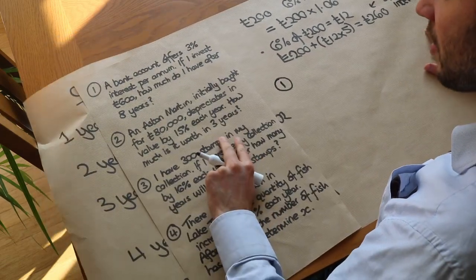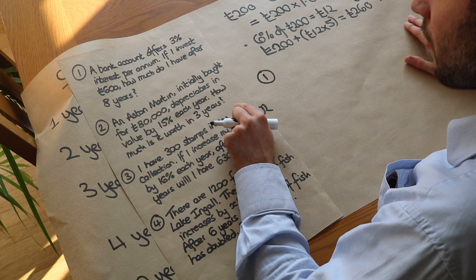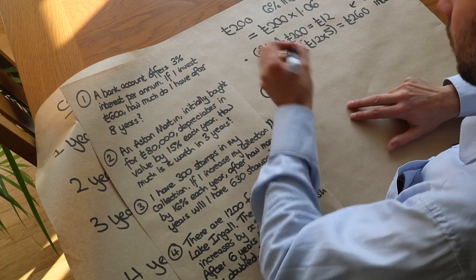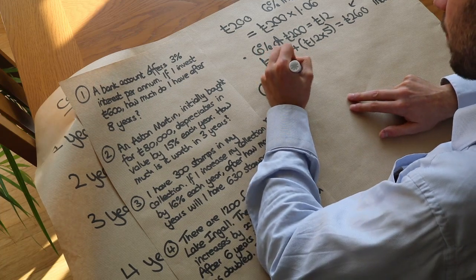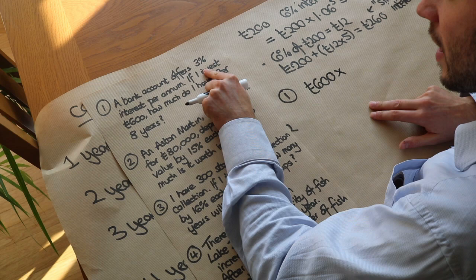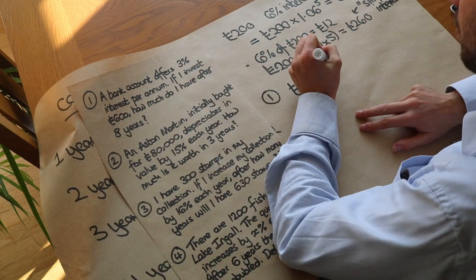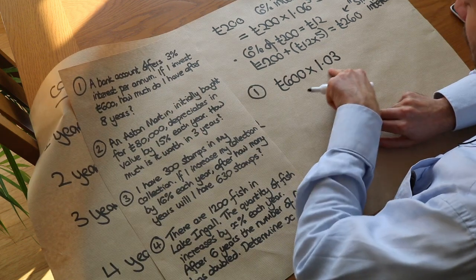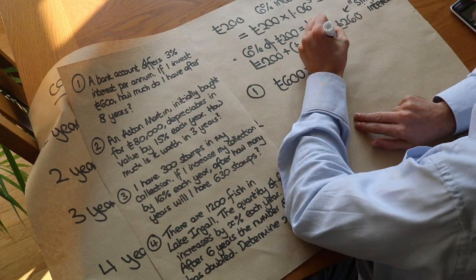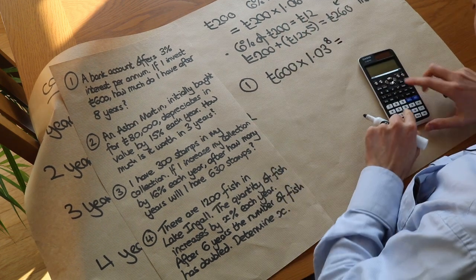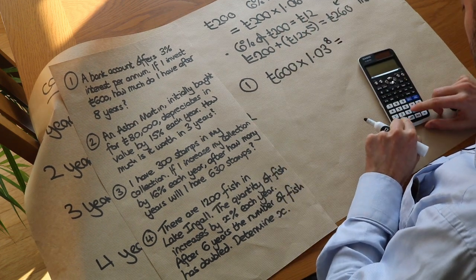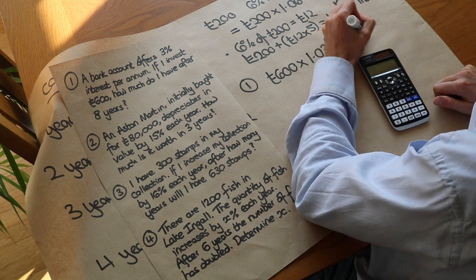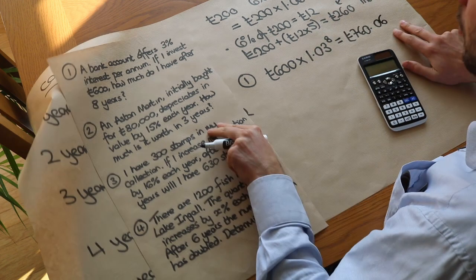Question one: a bank account offers 3% interest per annum. If I invest six hundred pounds, how much do I have after eight years? We start with six hundred pounds, multiply by 1.03 for a 3% increase each year, and apply it eight times using a power of eight. Six hundred times 1.03 to the power of eight gives seven hundred and sixty pounds and six pence to the nearest penny.